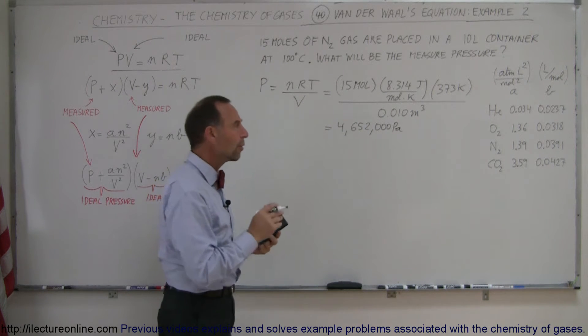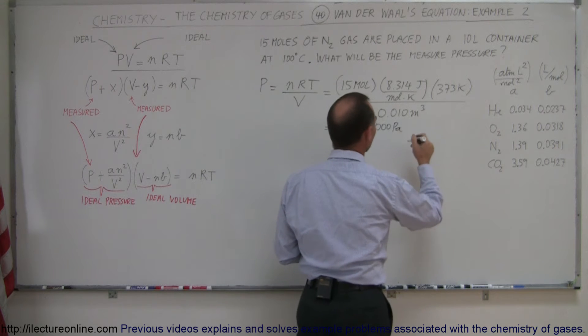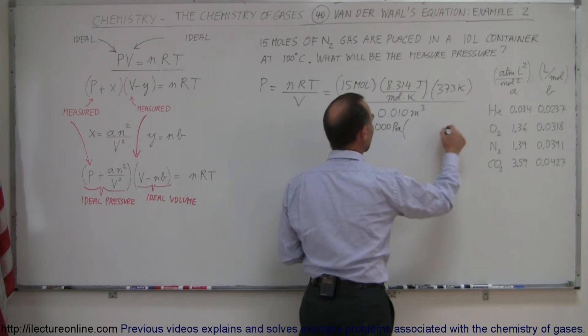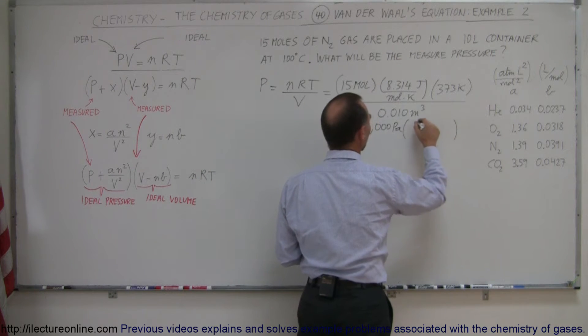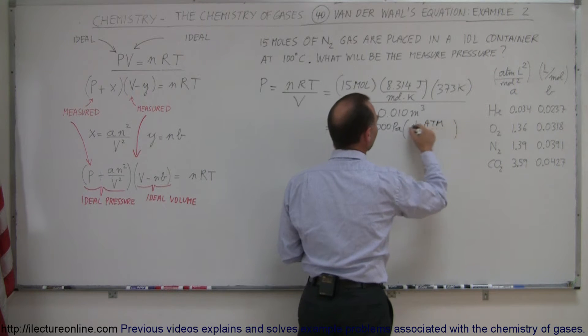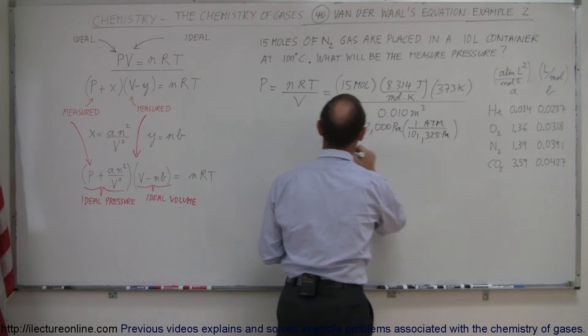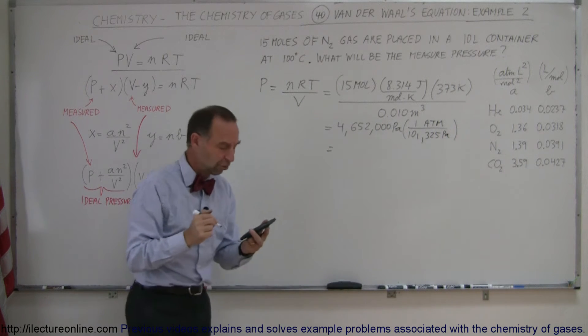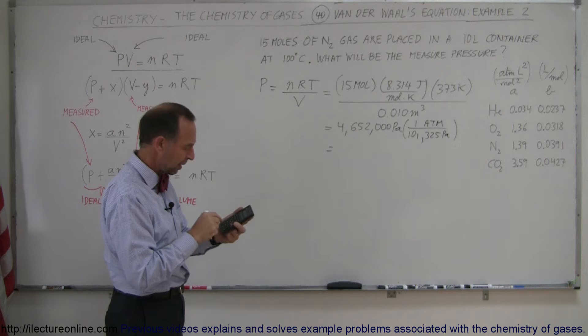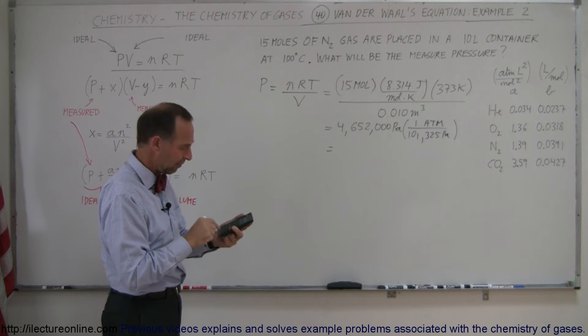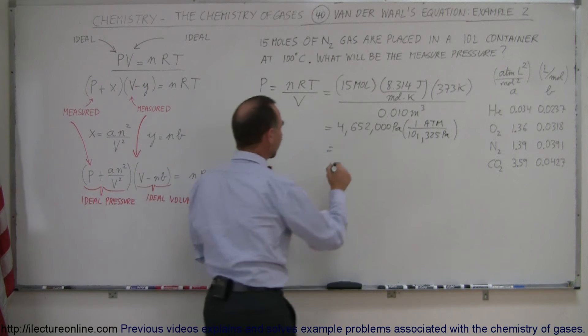Of course, remember that there's 101,325 Pascals per atmosphere. So we want one atmosphere. We divide that by 101,325 Pascals. And when we do that calculation, we get the pressure in atmospheres. So divide this by 101,325, and we get 45.9 atmospheres.